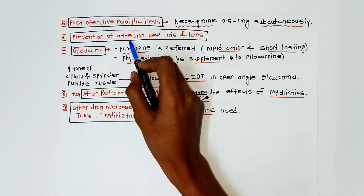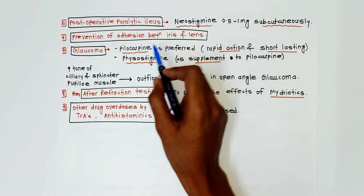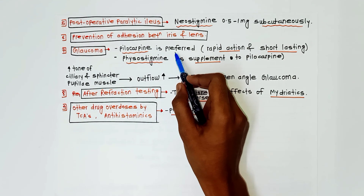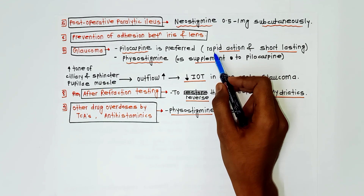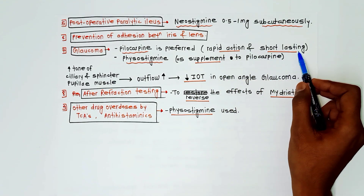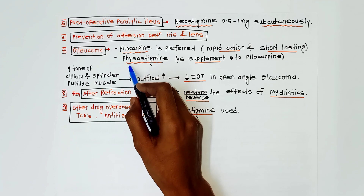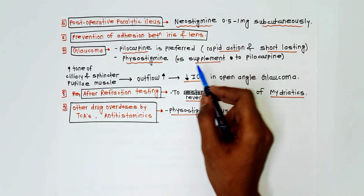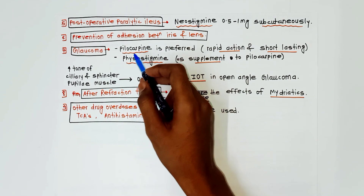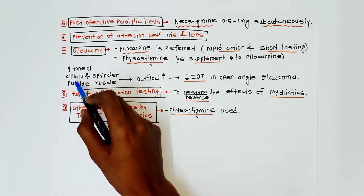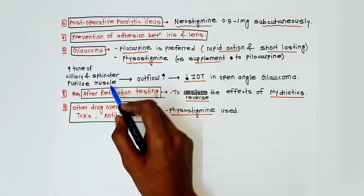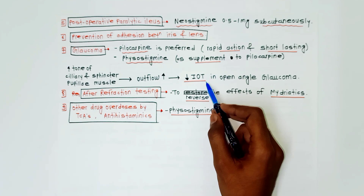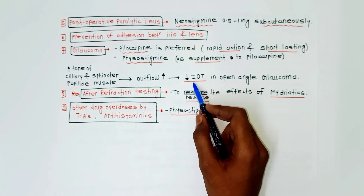Next is prevention of adhesion between the iris and lens. For glaucoma, pilocarpine is preferred because it has rapid and short-lasting action. Physostigmine is used as a supplement to pilocarpine. These drugs increase the tone of ciliary and sphincter pupillary muscles, leading to increased outflow and decreased intraocular tension in open-angle glaucoma.